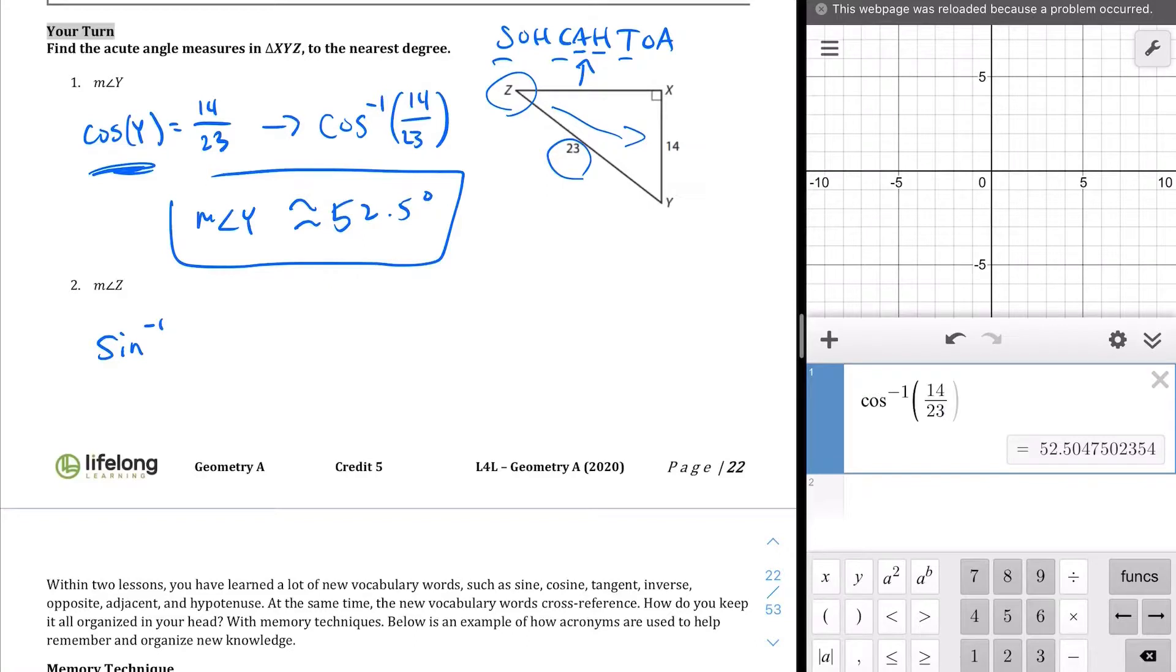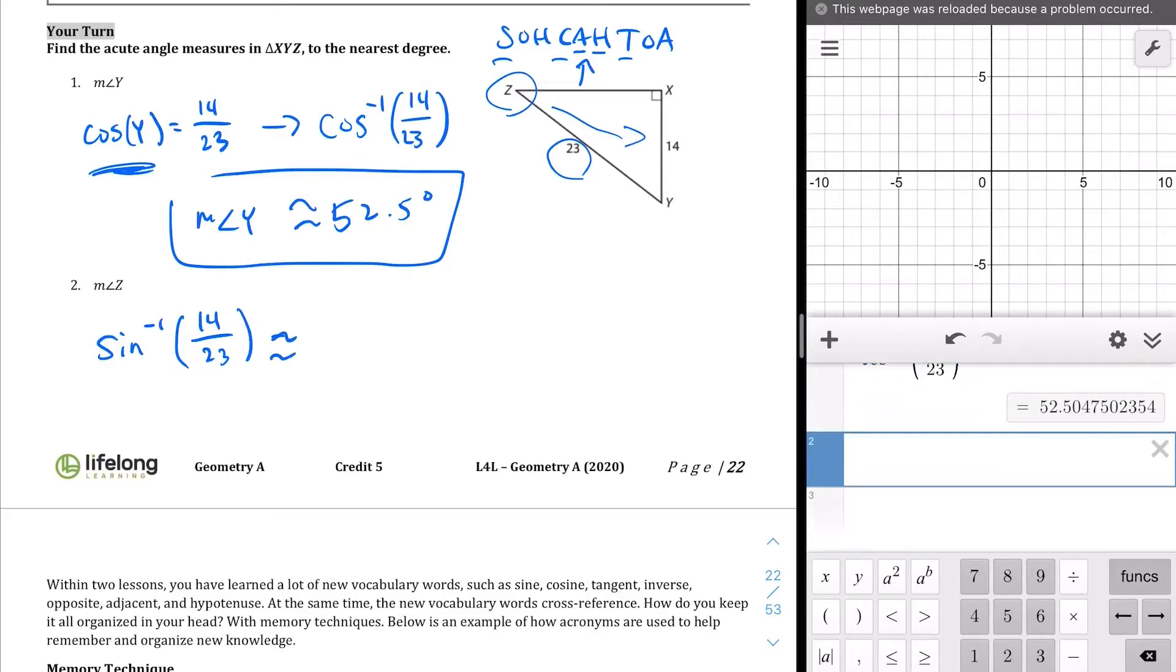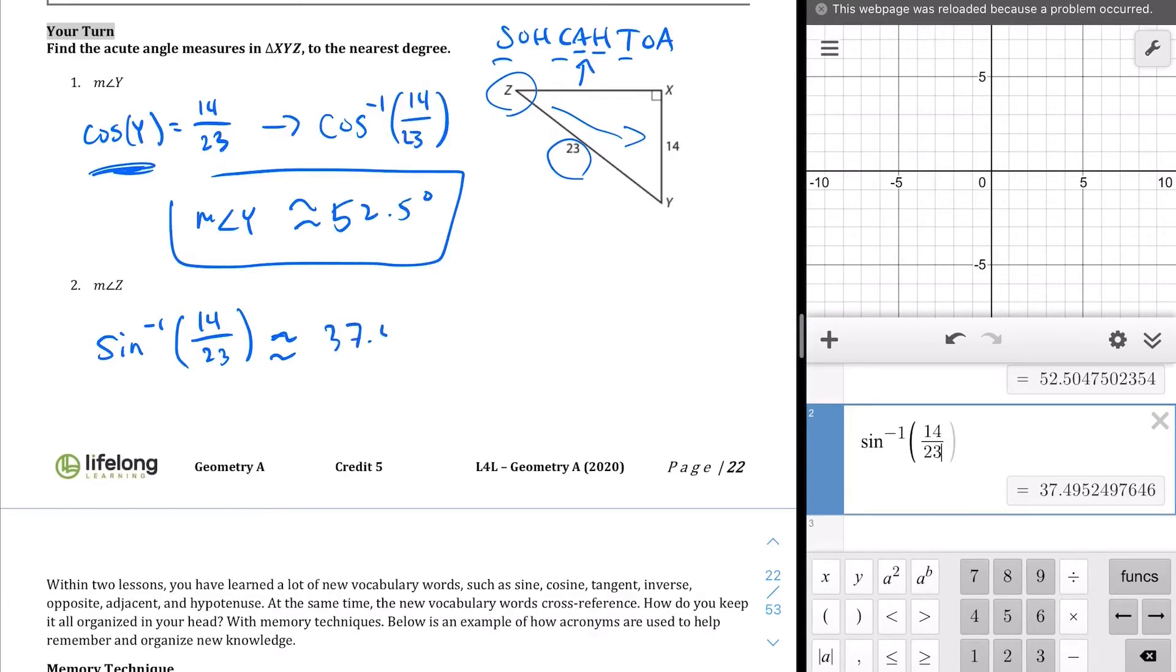Let's learn from the mistake we made in the previous question. The inverse sine of the opposite over hypotenuse, which is 14 over 23, will give us the angle measure, the approximate angle measure. So, let's punch that in there. Inverse sine of 14 divided by 23, we get 37.49. Let's go with 37.5-ish.